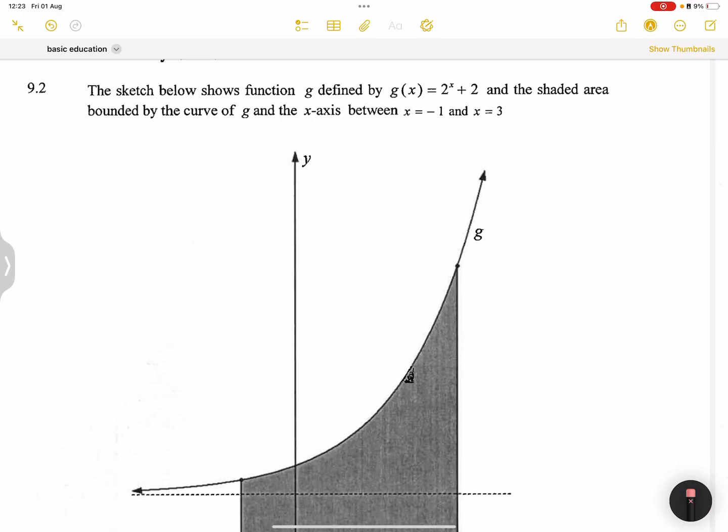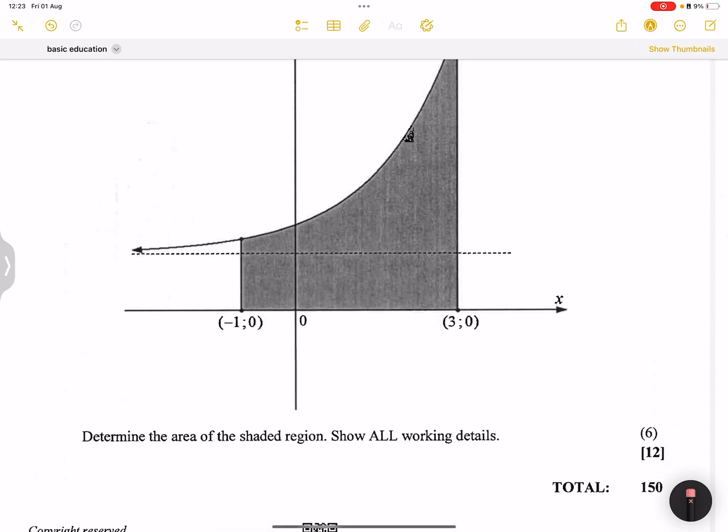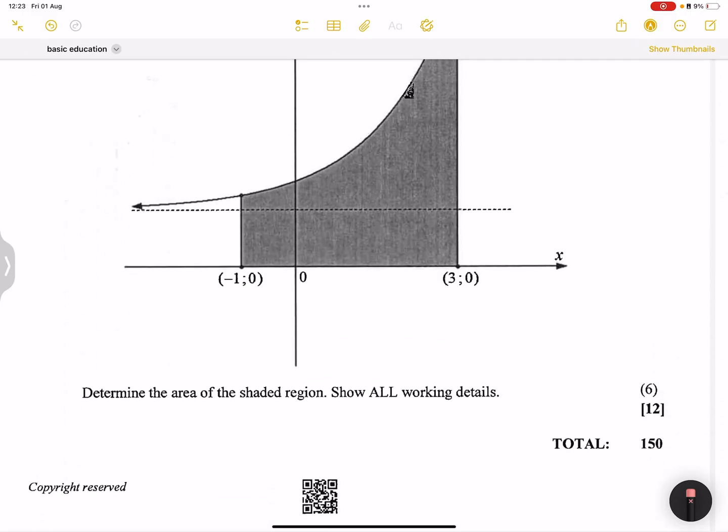The last question that we have here says the sketch below shows function g, which is defined by g of x equals 2 raised to the exponent x plus 2. This is definitely an exponential function. And the shaded area bounded by the curve g and the y-axis, that's between negative 1 and 3. Now they say to you, determine the area of the shaded region, show all working details.